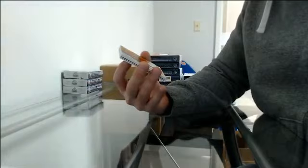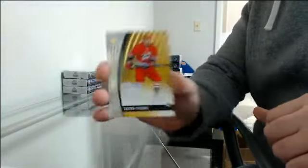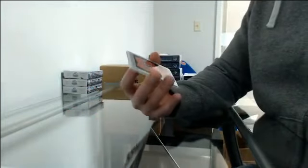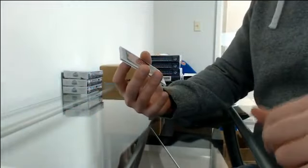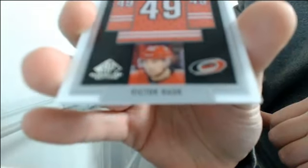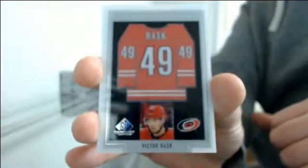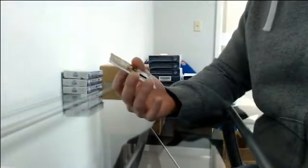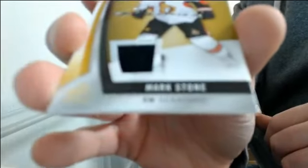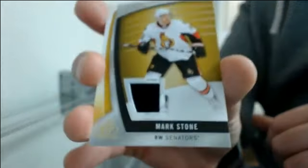Authentic rookie patch 14 to 49 for Carolina, Hayden Fleury. Frameworks for Carolina, Victor Rask. And jersey going to Ottawa, Mark Stone. Box 8.